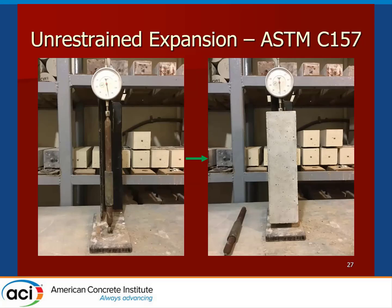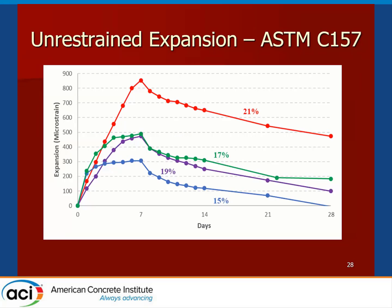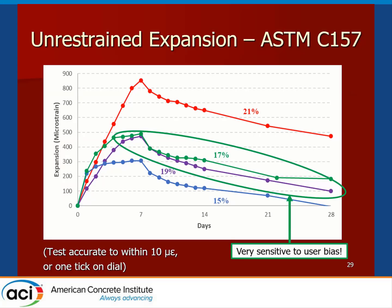The ASTM C157 unrestrained expansion test used a conventional dial gauge. We saw a general increase in peak expansion with increasing percent shrinkage comp admixture. With the exception of at 17 and 19%, there was some uncertainty in the data, partly because the dial gauge used for the ASTM C157 test in this case is only accurate to within 10 microstrain, so there is some noise in the data.